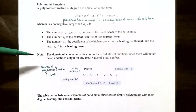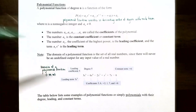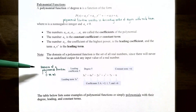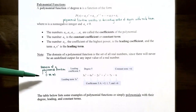Just like the domain of a quadratic function was the set of all real numbers, the domain of a polynomial function is also the set of all real numbers. No matter what value you input for x, you will have exactly one y value and it will never be undefined. So the domain of a polynomial function is negative infinity to positive infinity.